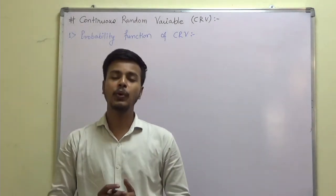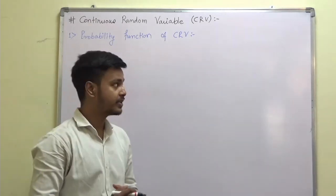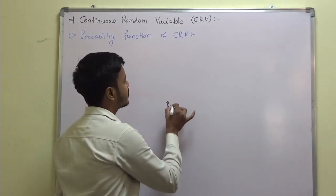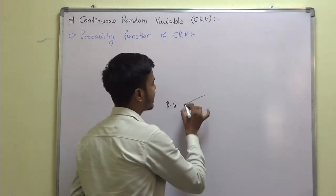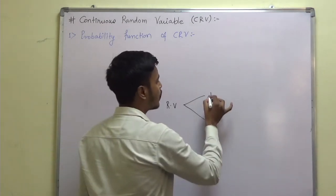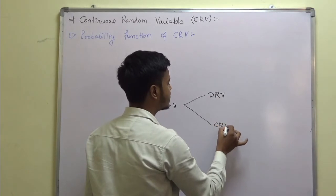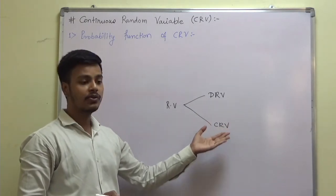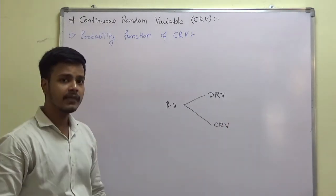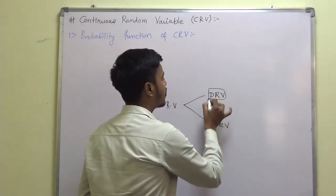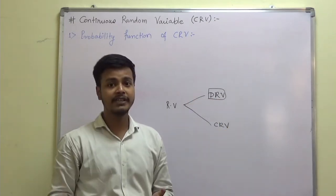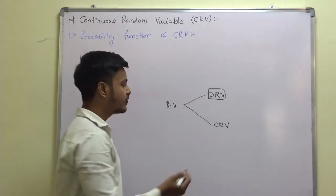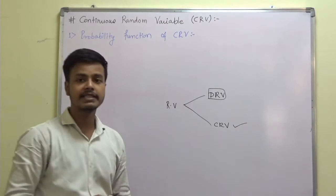Hello everyone and welcome to this learning dialogue where we are going to discuss the continuous random variable. We have already started the topic of random variables and seen its two types: the discrete random variable and the continuous random variable. If you want to learn the definitions in detail, you can go through the previous video lectures. We have also completed the topic covering the definition of probability function, probability distribution, and examples based on it. Now we are going to concentrate on the continuous random variable.